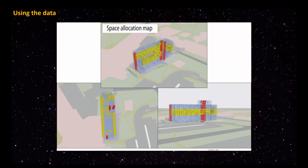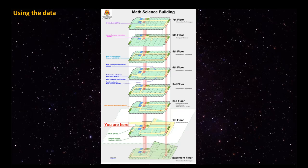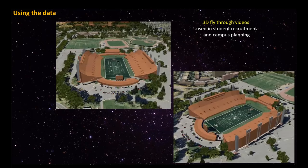We also dealt with space allocation maps — taking a building and creating a transparent 3D model where red squares represented elevator shafts and yellow squares represented the math faculty, showing how they are distributed within the building. This gave better visualization for keeping faculties together rather than distributing them across several floors or buildings. We used 3D modeling to generate wayfinding maps for the first floor of buildings, with frequently used areas like the IT help desk highlighted on the map. We also built fly-throughs for student recruitment and campus planning, showing the campus in a realistic form and representing distances between campus areas like the football stadium.